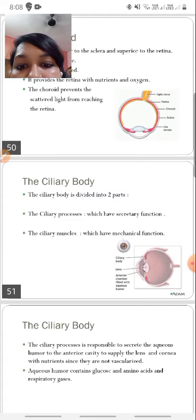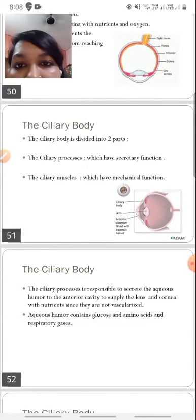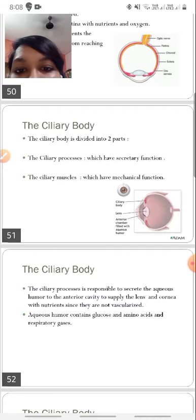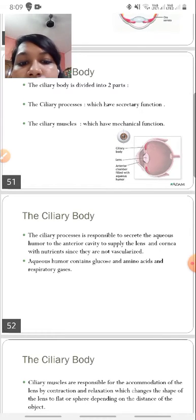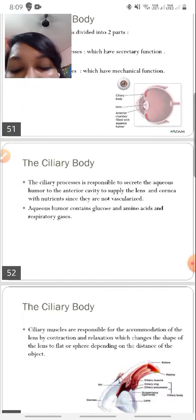The choroid prevents the scattered light from reaching the retina, so it limits the amount of light reaching the retina. Now next comes the ciliary body. The ciliary body is divided into two parts. Firstly, we have the ciliary processes which are nothing but the finger-like projections. They have secretory function because they secrete aqueous. Next is the ciliary muscle which have mechanical function. The ciliary process is responsible for secreting the aqueous humor to the anterior chamber to supply the lens and the cornea with nutrients since they are not vascularized.